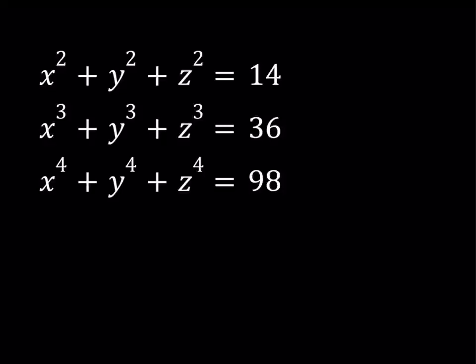Hello everyone. In this video we're going to be solving an awesome polynomial system. This problem is kind of similar to a long list IMO problem from Germany — maybe we'll do that problem some other time. We have the equations: x squared plus y squared plus z squared equals 14, x cubed plus y cubed plus z cubed equals 36, and x to the fourth power plus y to the fourth power plus z to the fourth power equals 98. We're looking for all solutions, real and complex.